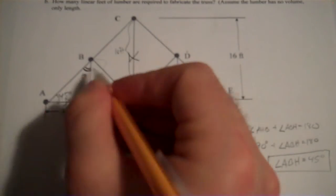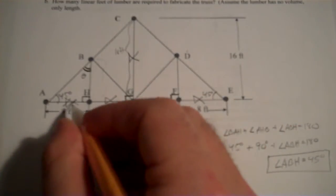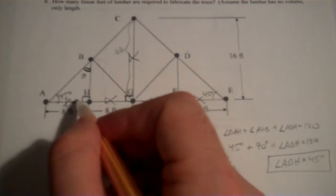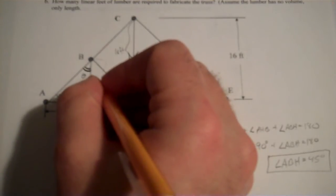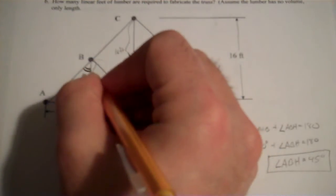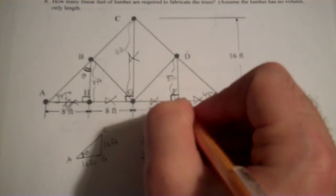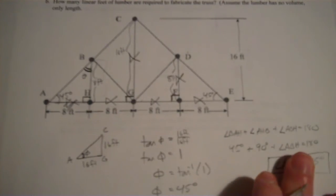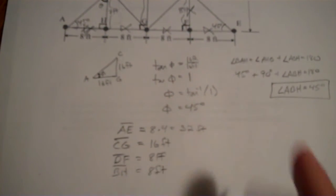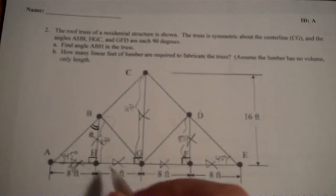Segment BH: this is 45 degrees and this is 45 degrees, and the base sections are 8 and 8. The tangent of 45 degrees is 1, which means opposite over adjacent is 1 — so if this is 8 feet, this has to be 8 feet. So segment BH is 8 feet. By symmetry, DF equals 8 feet and BH equals 8 feet.